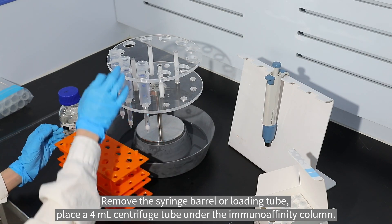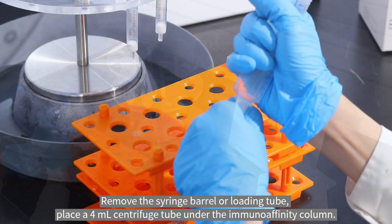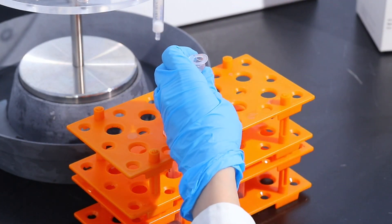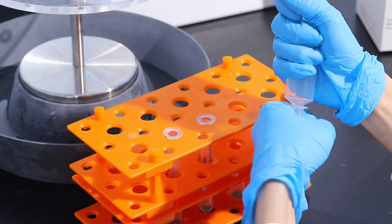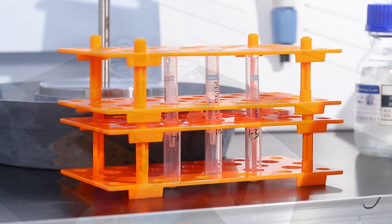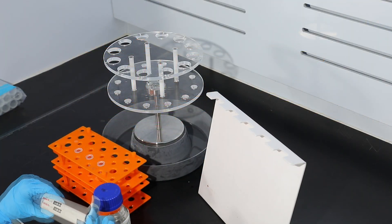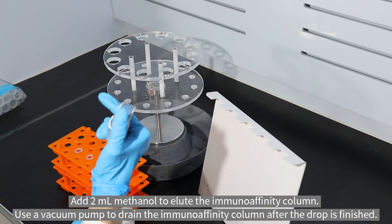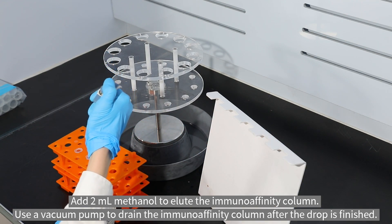Remove the syringe barrel or loading tube. Place a four milliliter centrifuge tube under the immunoaffinity column. Add two milliliter methanol to elute the immunoaffinity column. Use a vacuum pump to drain the immunoaffinity column after the drop is finished.